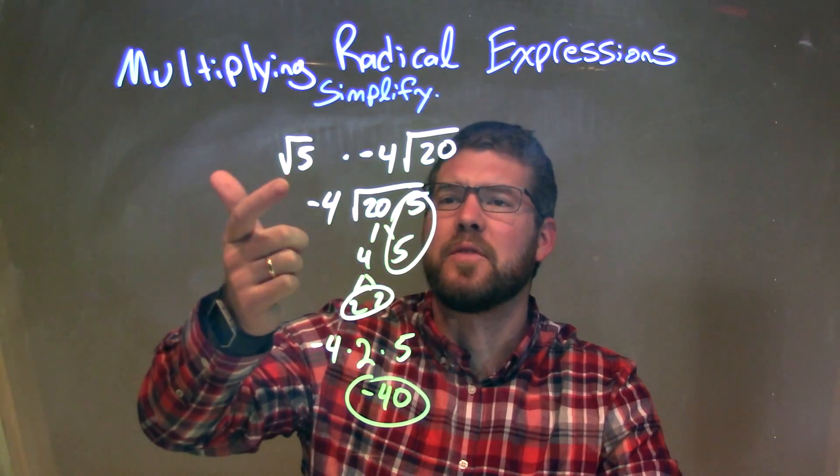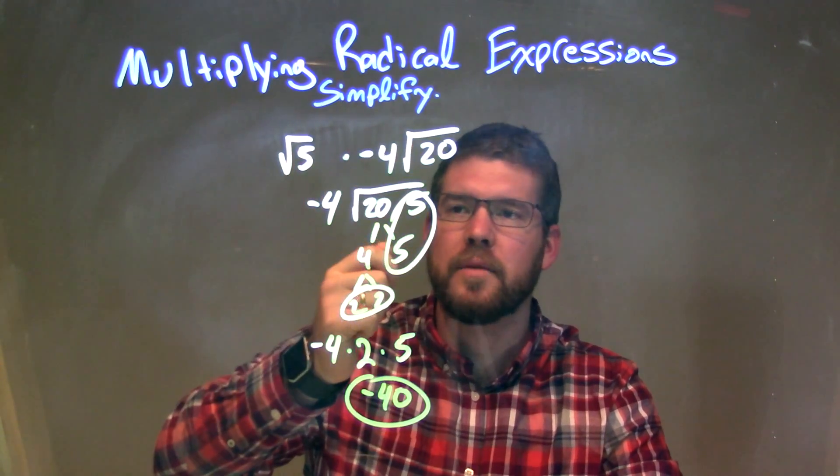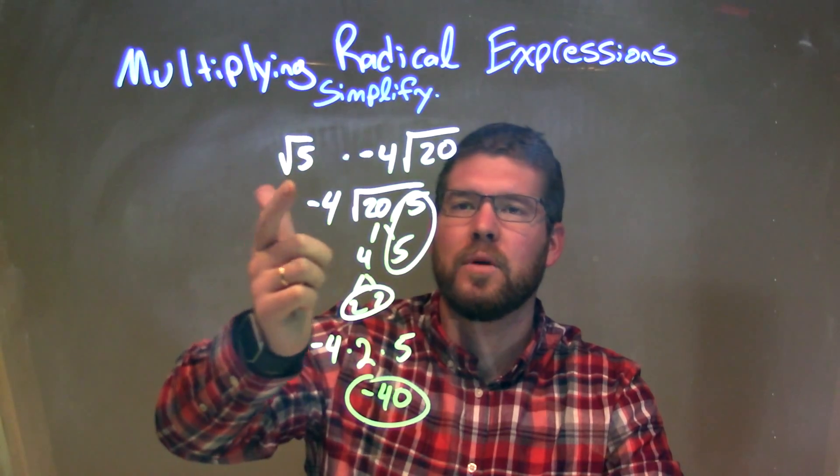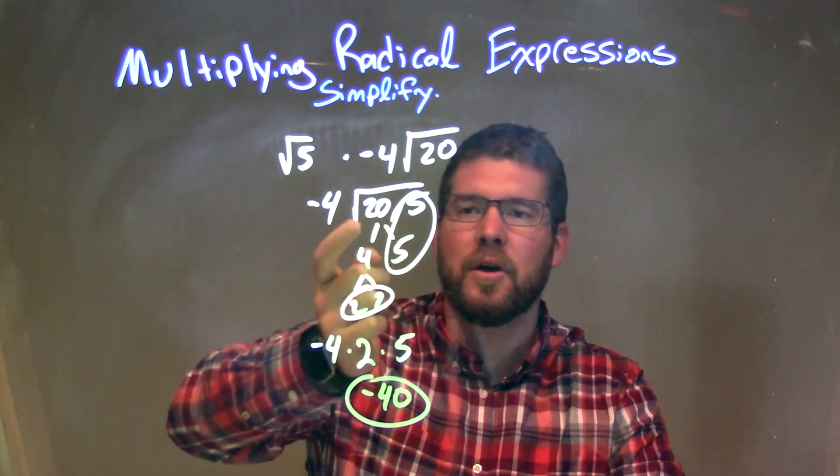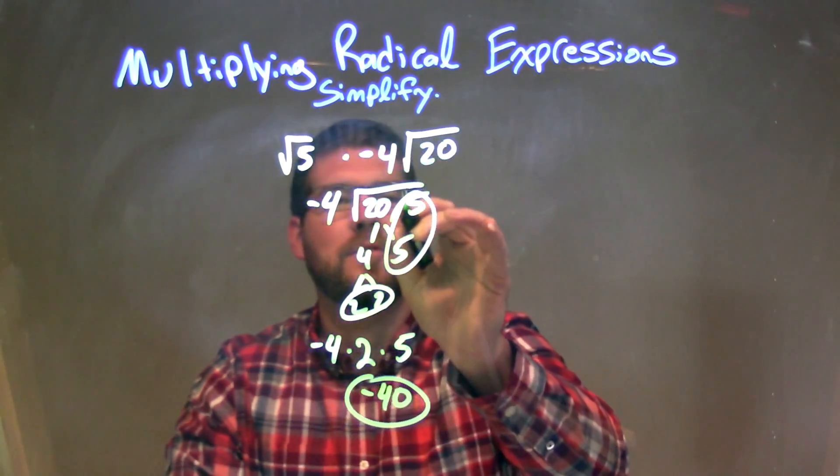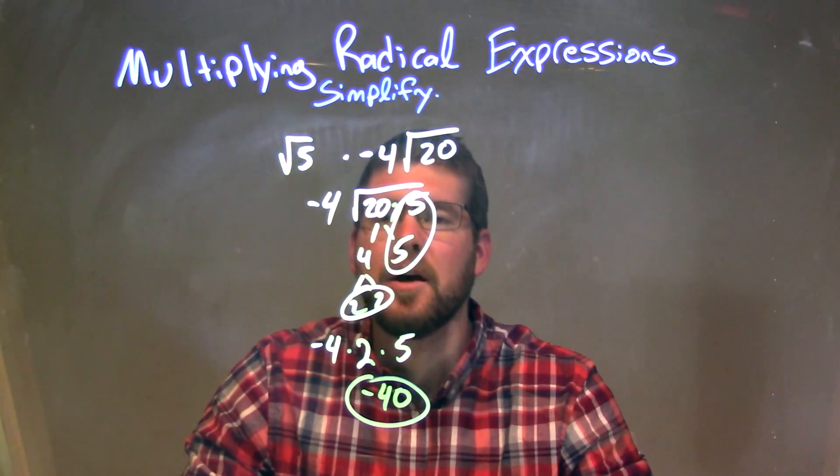So as a recap, we're given the square root of 5 times negative 4 times the square root of 20. We combine that by putting the square root of 5 and the square root of 20 together to be under one square root of 20 times 5.